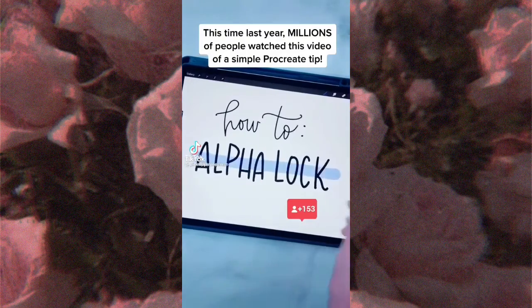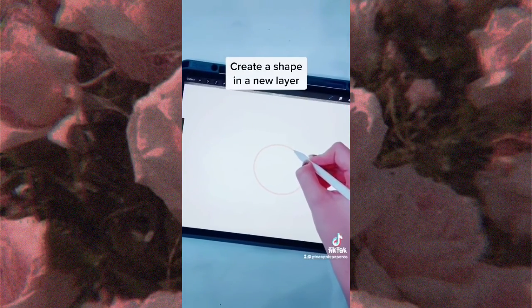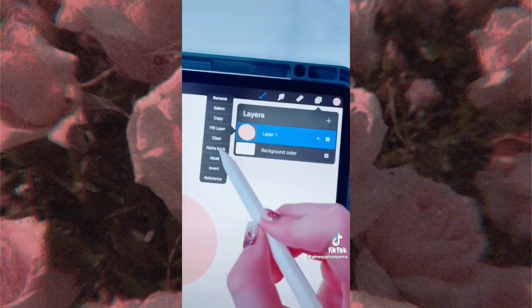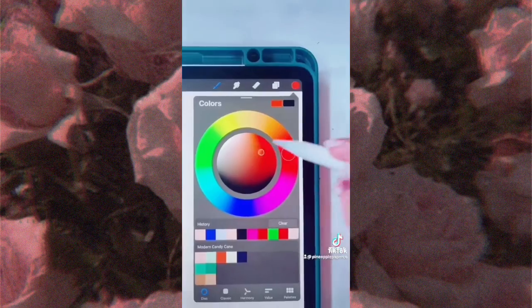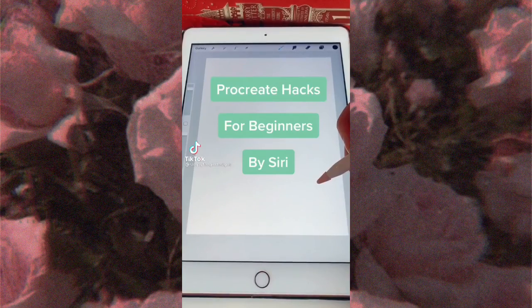Today we're learning about how to use alpha lock in Procreate. Create a shape in a new layer and then fill the shape with a solid color. Head to the layers panel and click alpha lock. Select a new color and then you can only draw inside the original shape. Next time we're talking clipping masks.